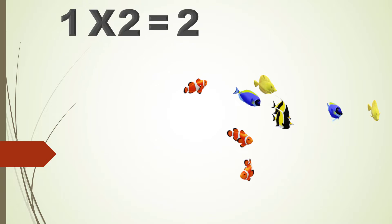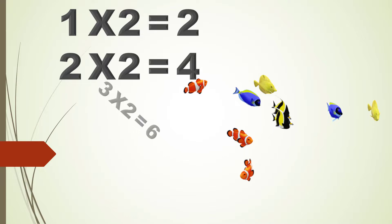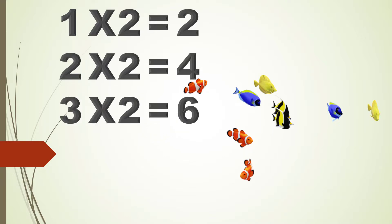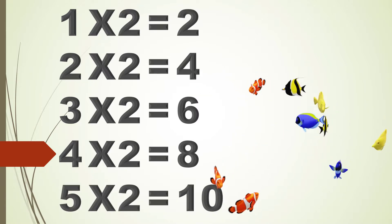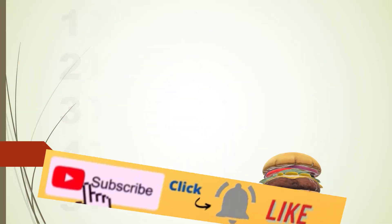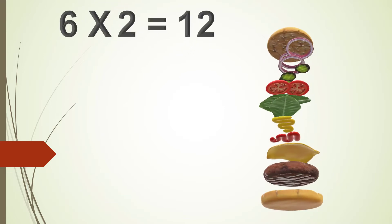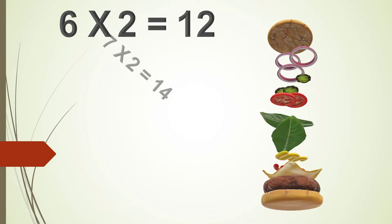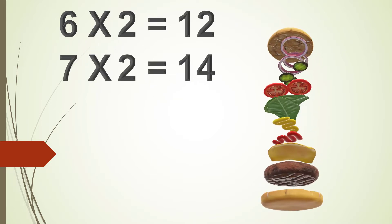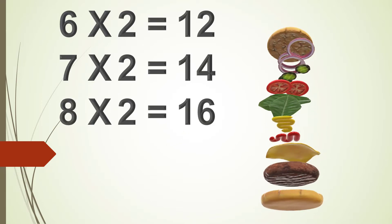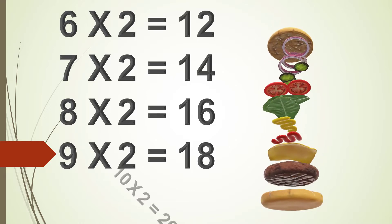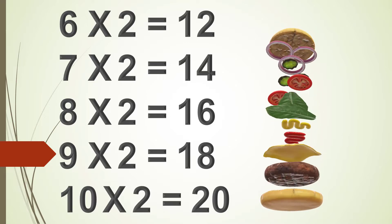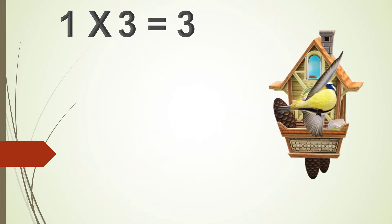1 x 2 is 2, 2 x 2 are 4, 3 x 2 are 6, 4 x 2 are 8, 5 x 2 are 10, 6 x 2 are 12, 7 x 2 are 14, 8 x 2 are 16, 9 x 2 are 18, 10 x 2 are 20.